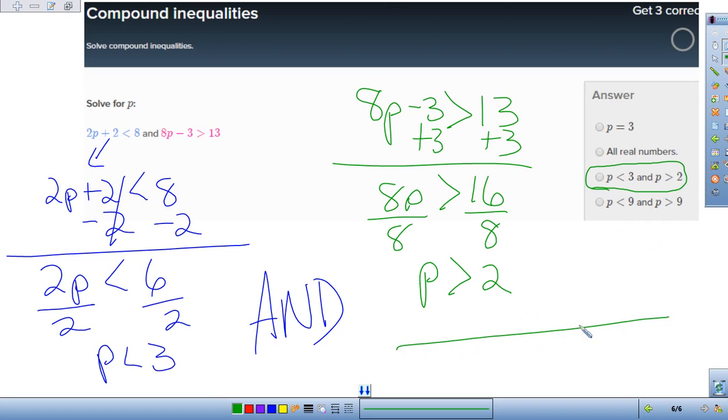If you look at that on a number line, there is 2. There is 3. We want to be less than 3. So I circle 3 and go to the left. And we want to be greater than 2. So I circle 2 and go to the right. So it's just this area in here that is both and.